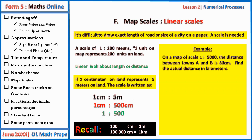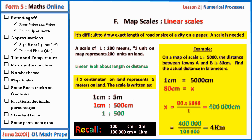Another example: on a map of scale 1:5000, the distance between towns A and B is 80 centimeters. Find the actual distance in kilometers. The scale means 1 cm represents 5000 cm, so 80 cm represents 80 × 5000 = 400,000 cm. Since 100,000 centimeters make one kilometer, dividing by 100,000 gives an actual distance of four kilometers.